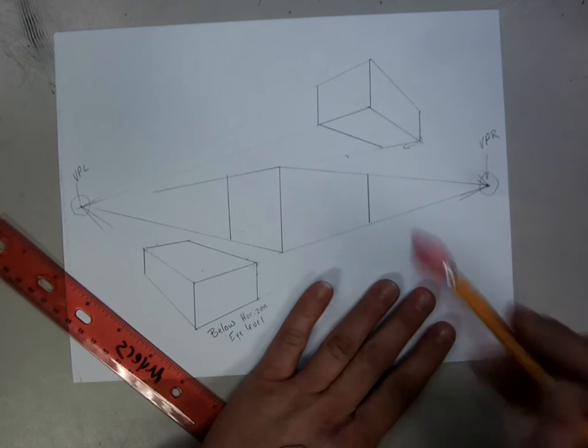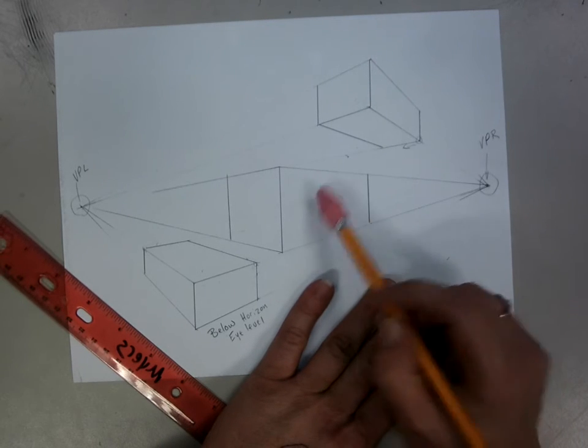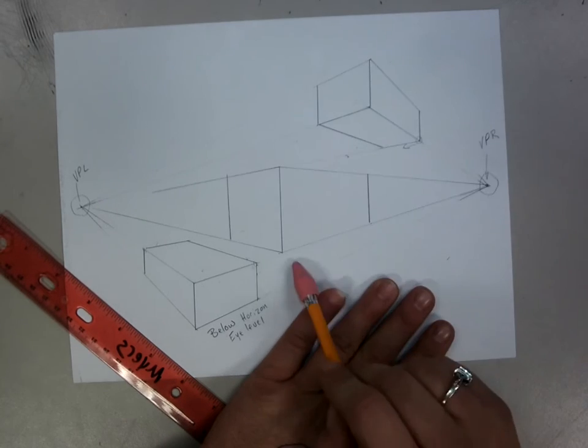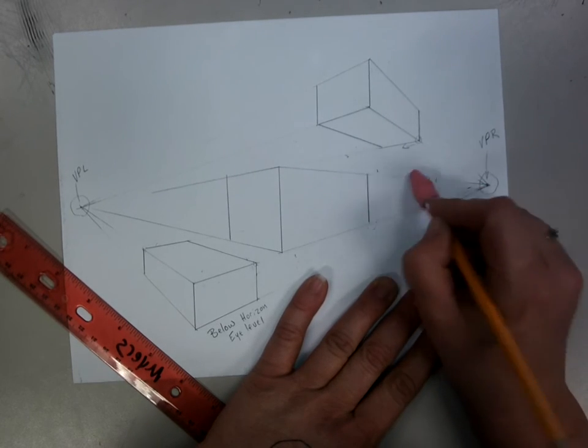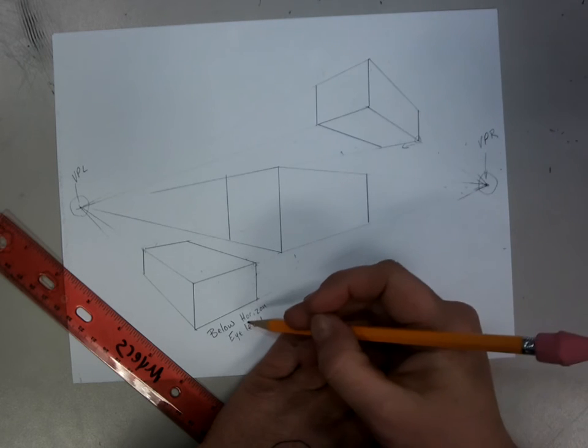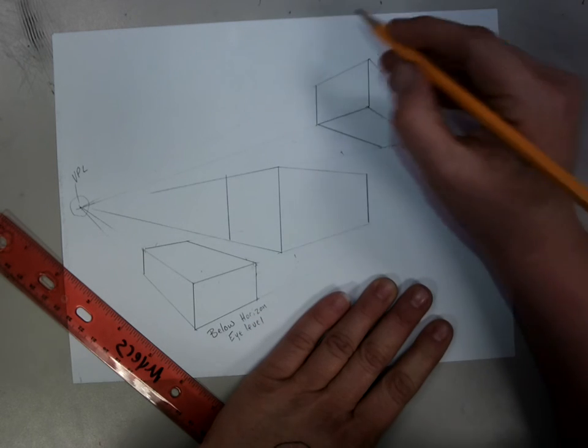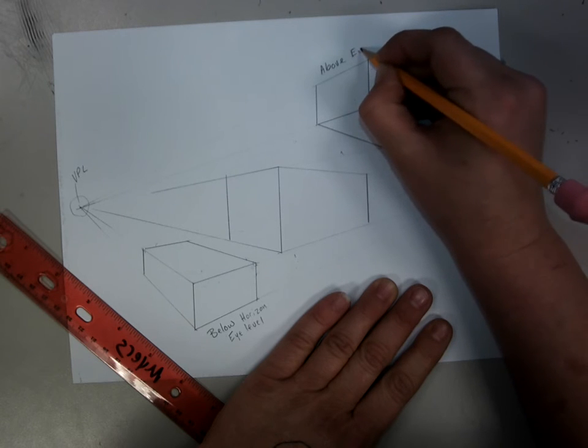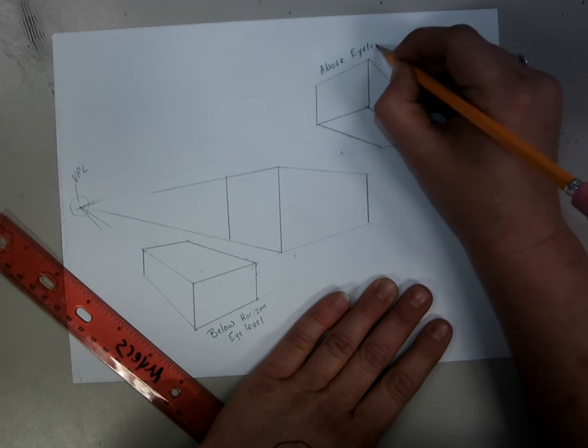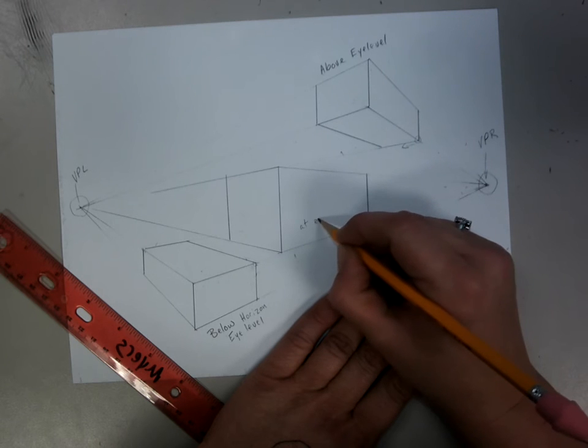So now I have my box, it's over the horizon so you don't get to see the top and you won't get to see the bottom. This one is considered at the horizon. So I have one below the horizon or the eye level, one above the eye level, and one at eye level.